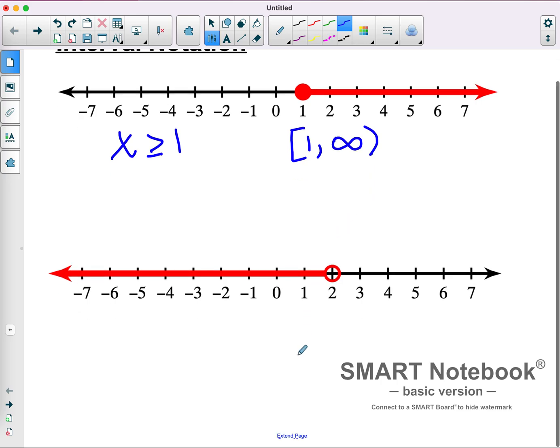In this second number line, we have every value below 2, but we're not including 2. It's an open circle, so that's not included. As an inequality, you might write that as x is less than 2.